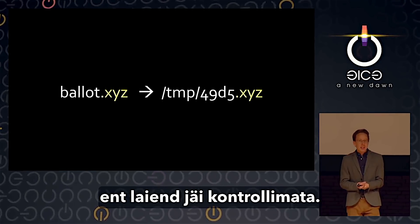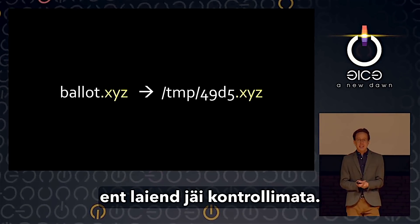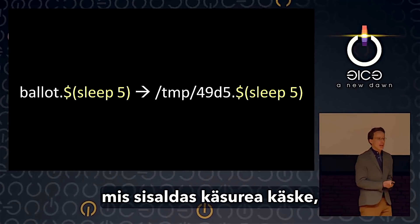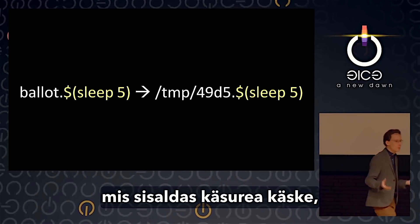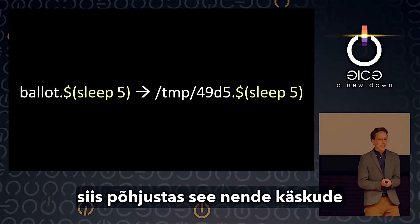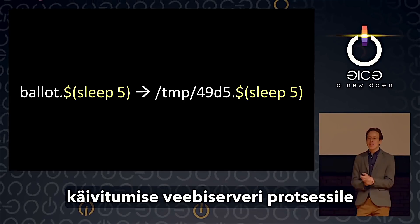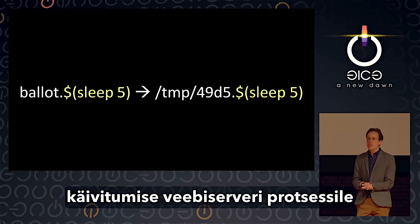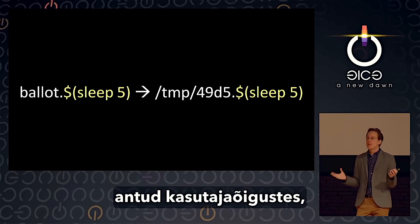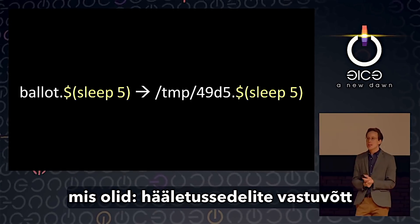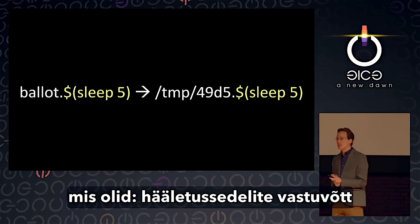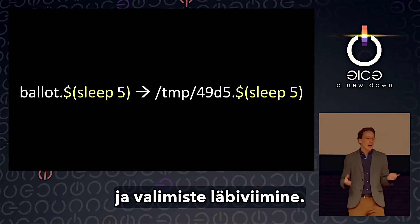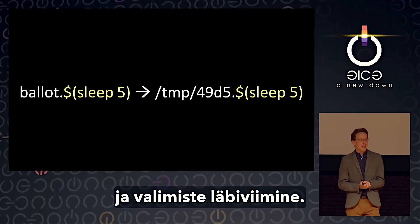The particular library version they were using assembled a string and used a system call to pass it to Bash. It sanitized the base name of the file, but it didn't sanitize the extension. So if you used an extension that had some Bash commands in it, they would be executed at the shell under the user permissions of the web server process that was accepting ballots and running the election.